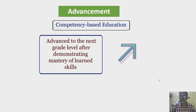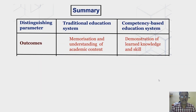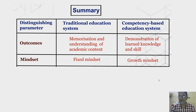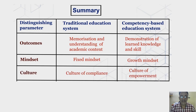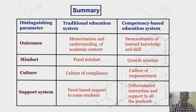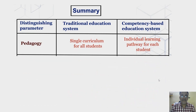To summarize the eight areas of difference: First, outcomes — memorization and understanding of academic content in the traditional system, versus demonstration of learned knowledge and skills in CBE. Second, mindset — fixed mindset in the traditional system versus growth mindset in CBE. Third, culture — culture of compliance in traditional education versus culture of empowerment in CBE. Fourth, support system — need-based support for some students in traditional education versus differentiated instruction and support for all students in CBE. Fifth, pedagogy — a single curriculum for all students based on age in traditional education, versus an individual learning pathway for each student in CBE.